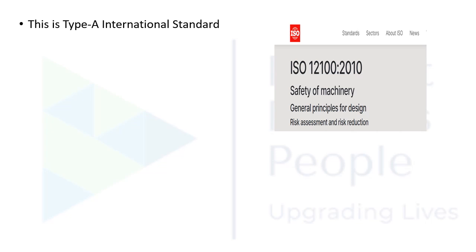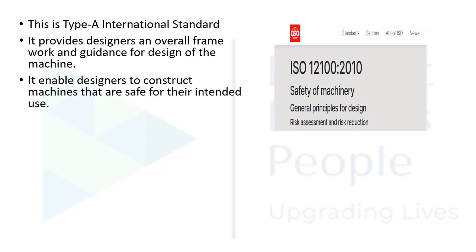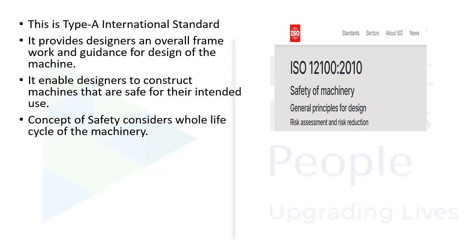ISO 12100 is a Type A international standard. Its purpose is to provide designers an overall framework and guidance for the safe design of machines. It enables designers to construct machines that are safe for their intended use. The concept of safety considers the ability of a machine to perform its intended function during its whole lifecycle — from transportation, installation, and assembly, through use, and finally to the scrapping of the machine. So this standard covers the cradle-to-grave approach.